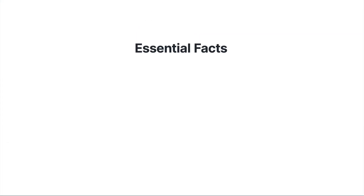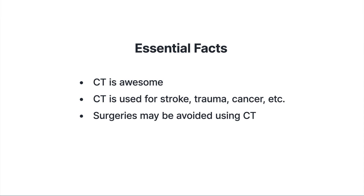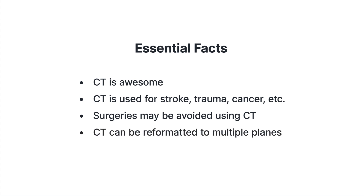Here are the basic facts to know about CT. First, CT is used for a number of indications, but it is especially important for stroke, trauma, and cancer care. Surgeries can sometimes be avoided because CT helps us see internal pathologies that used to require exploratory surgery. CT can be reformatted to multiple imaging planes — the traditional view is axial, but sagittal and coronal views are also possible. Finally, CT displays tissue based on the density of the underlying tissues. That's an introduction to computed tomography.